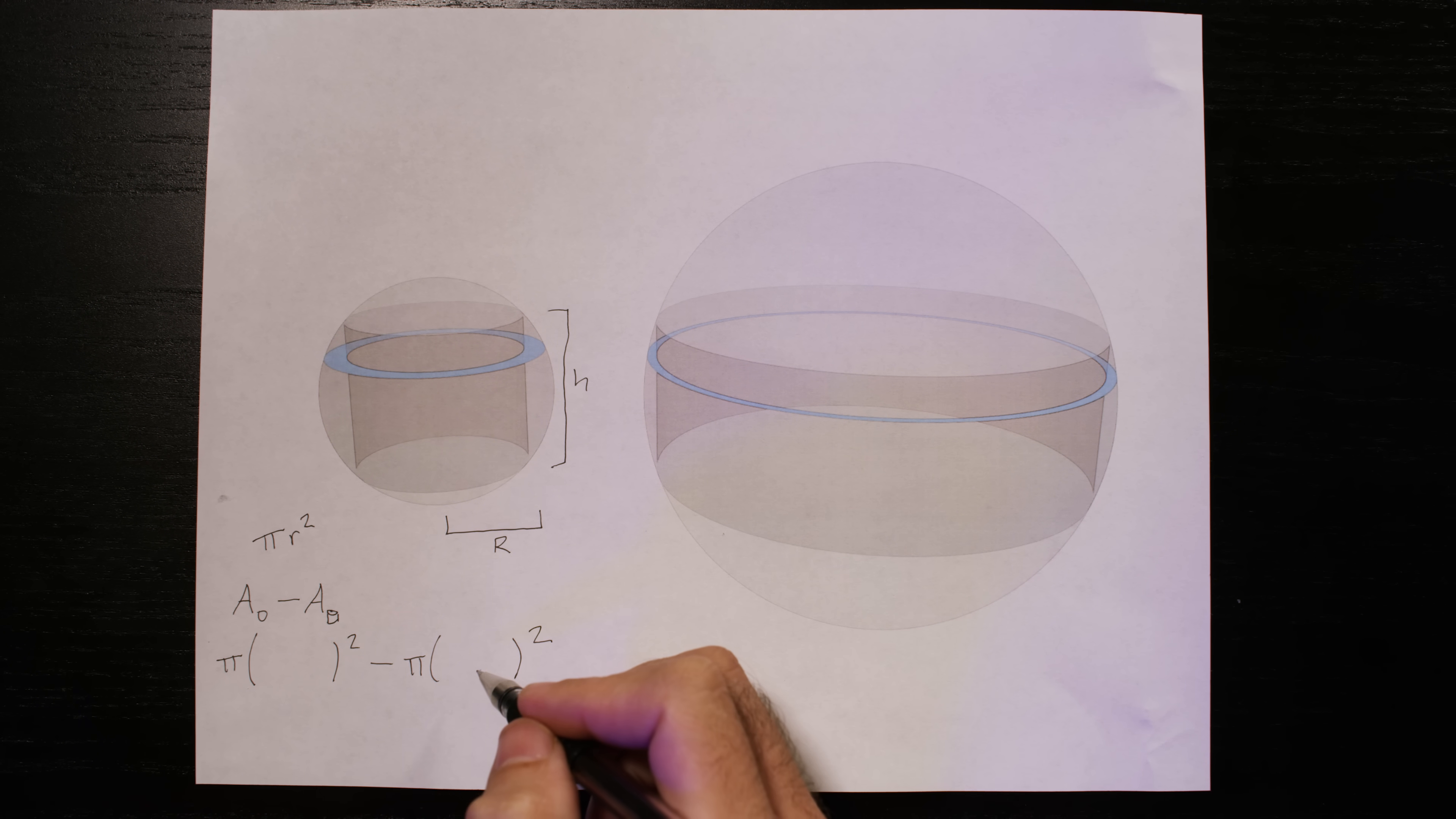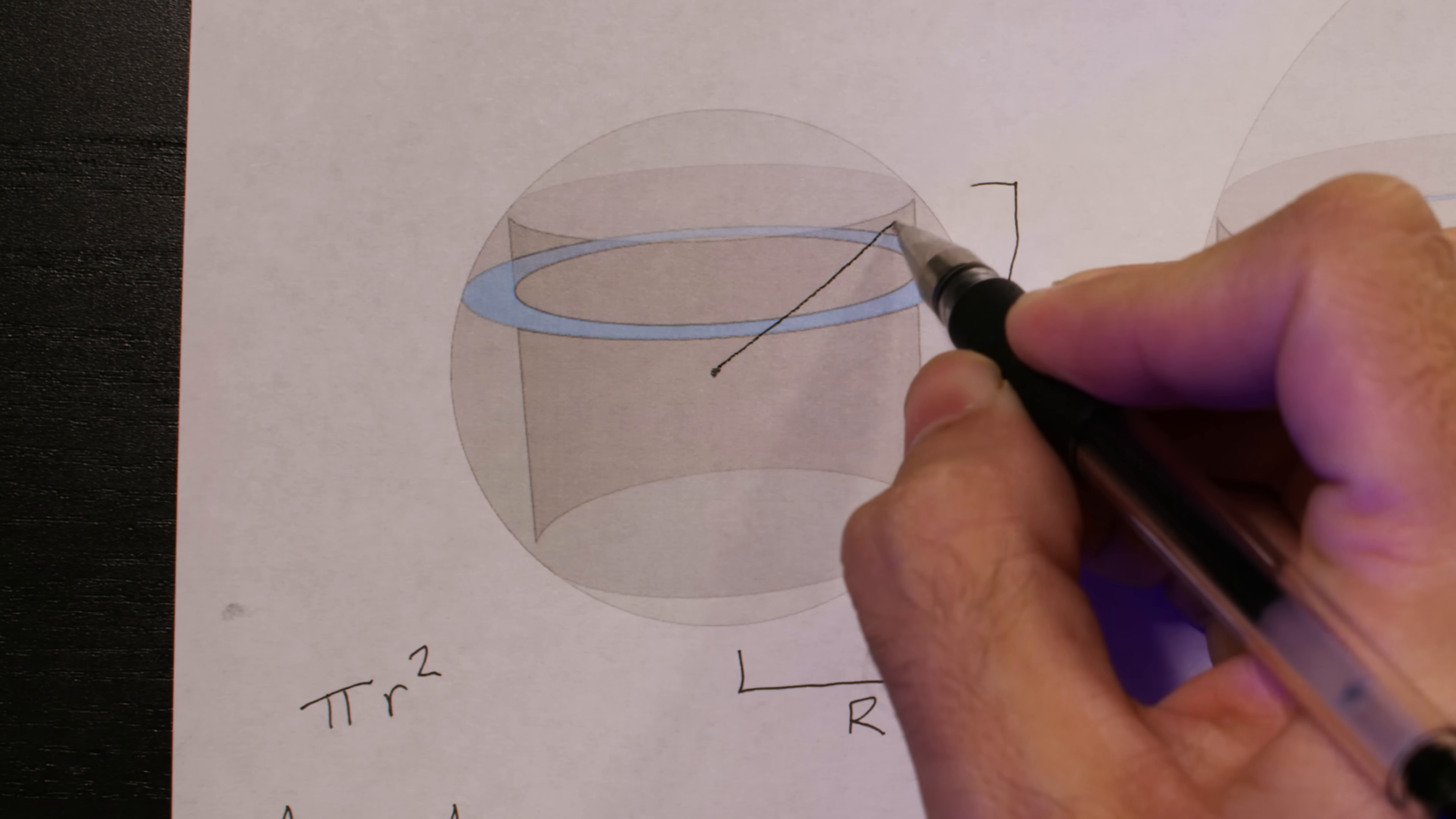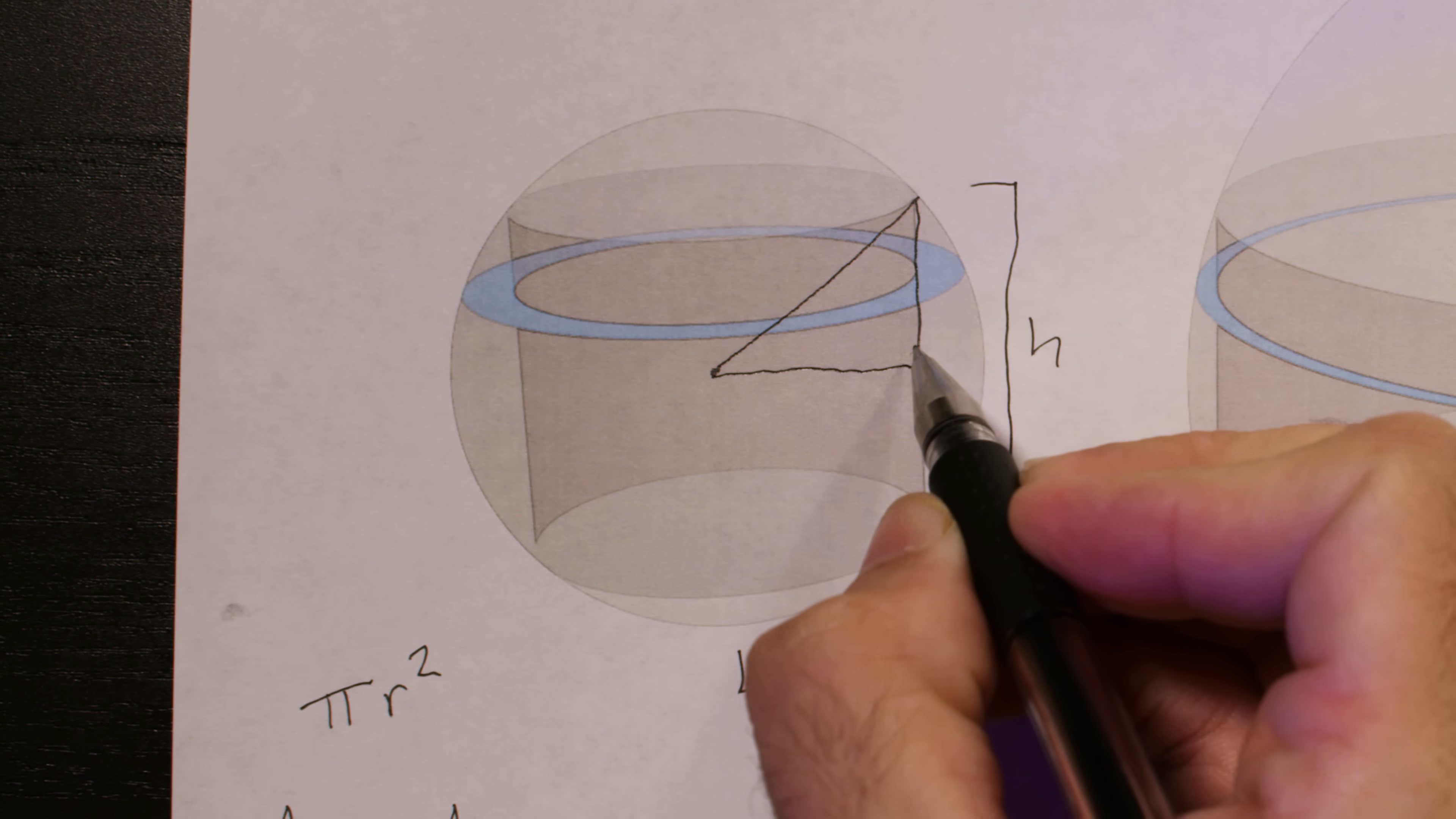But what are their radii? Well, if this is the center of the sphere, we can draw a line straight up to the corner of the cylinder, down the side of the cylinder, and then connect to form a right triangle.